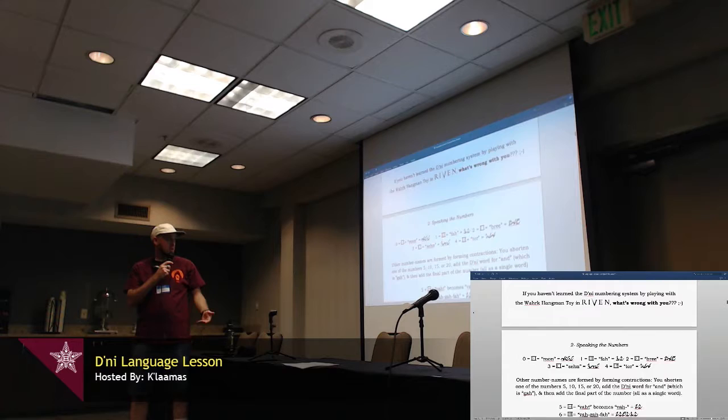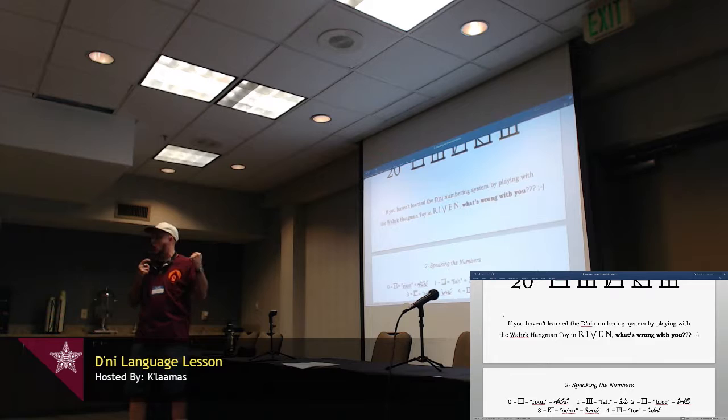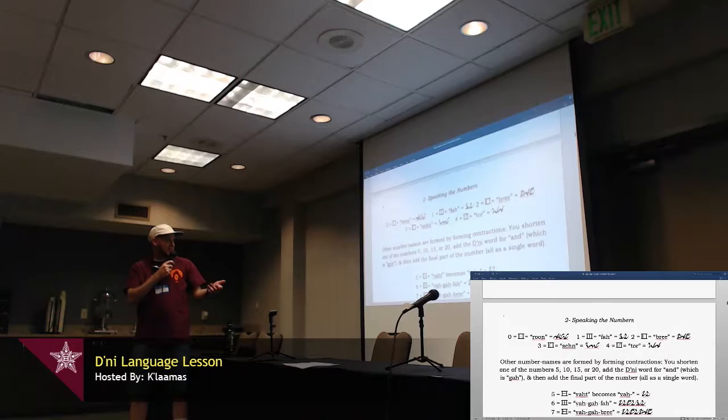The best way to learn the numbers is in Riven. If you haven't learned D'ni by playing with the Wahrk hangman toy, what's wrong with you? It's awesome. It's creepy, but it's awesome. Okay. Speaking the numbers, 0 through 4 is Roon, Fa, Bree, Sen, Tor.